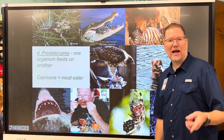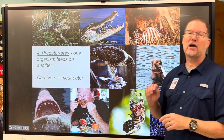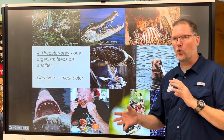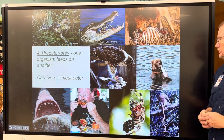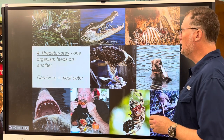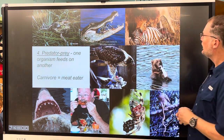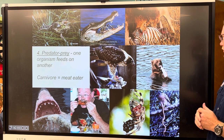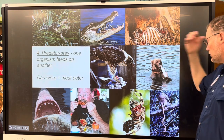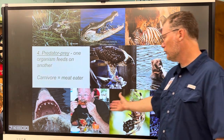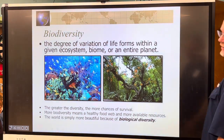The last relationship in the chart is the predator-prey relationship, where one organism feeds on another. Examples include carnivores — meat eaters including humans — such as a snake eating a frog, alligators and crabs, lions and zebras, bears and fish, hawks and snakes, spiders and insects, and humans and cows. Basically any organism eating another.